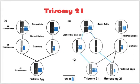Down syndrome is also called trisomy 21 because the defect occurs at chromosome number 21. A syndrome is a pattern of anomalies that occur together, caused by a single known or unknown defect. Down syndrome is called a syndrome because trisomy 21 is the single defect causing that entire spectrum of anomalies.